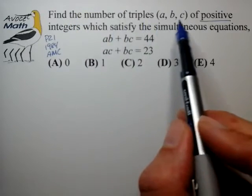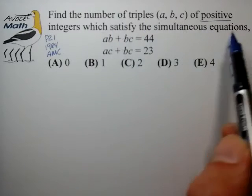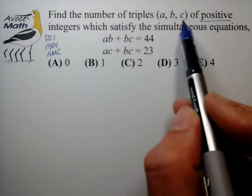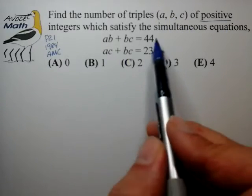We want to find the number of triples (a, b, c) of positive integers which satisfy the simultaneous equations shown. As an initial survey of the problem we have three unknowns of positive integers. We have two equations.